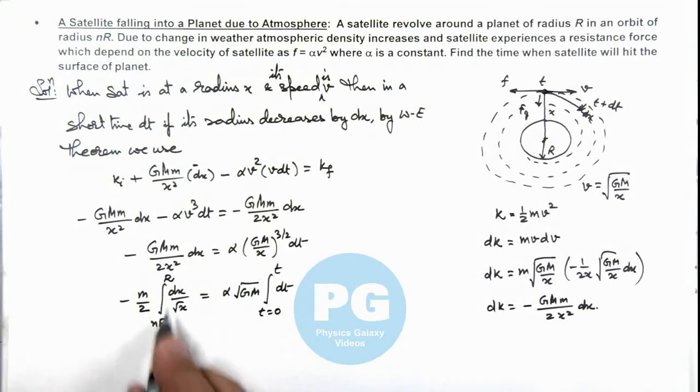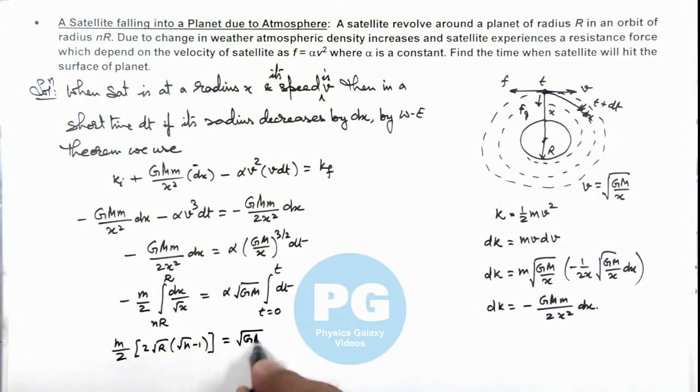Then on integrating we can see the values we are getting is, I'll substitute the limits also and incorporate this negative sign and reversing the limits. This will be m/2 multiplied by twice of √R multiplied by √n minus 1, is equal to √(GM) α t.